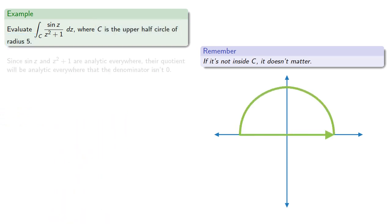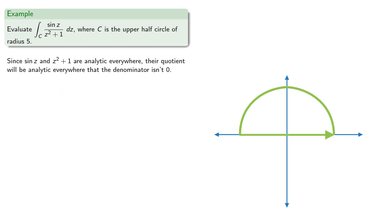Since sine z and z² + 1 are analytic everywhere, their quotient will be analytic everywhere that the denominator isn't 0. So solving for the denominator equal to 0 gives us...